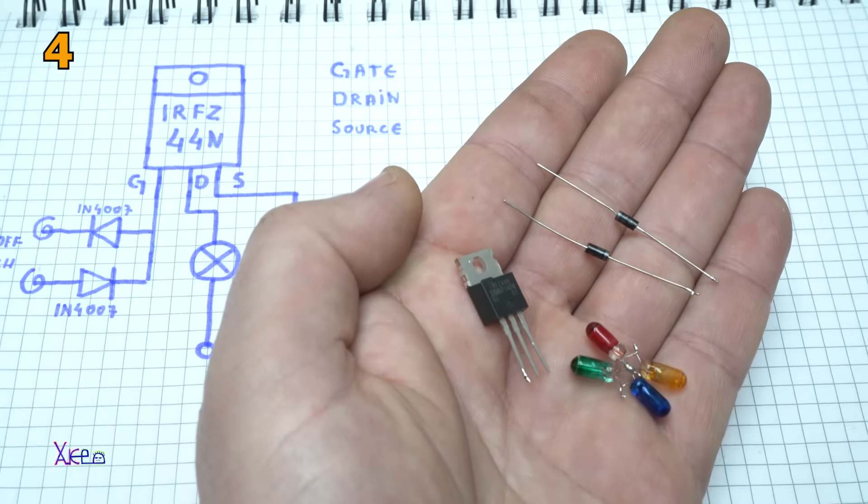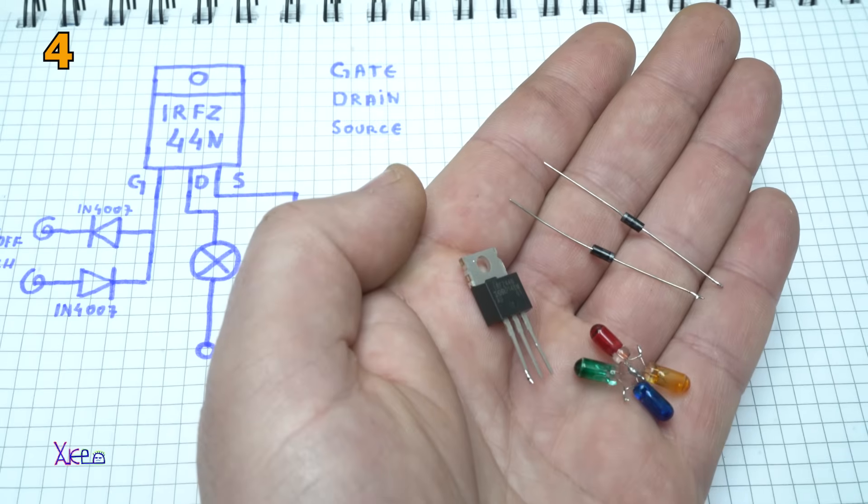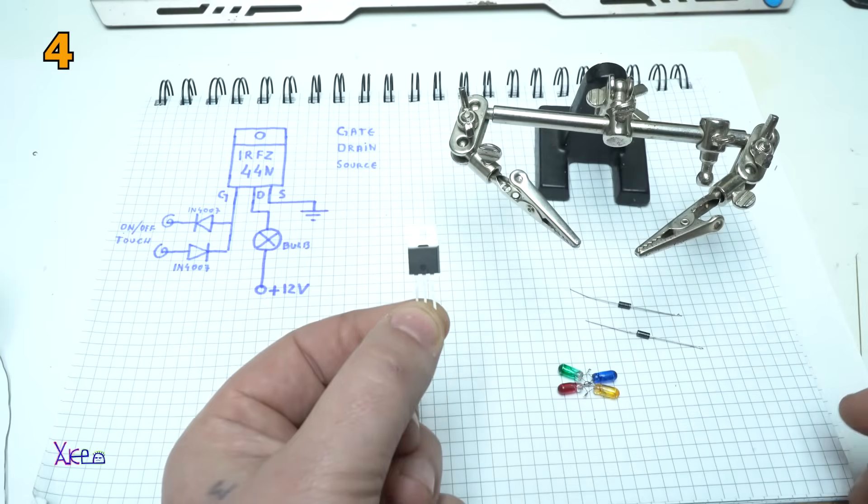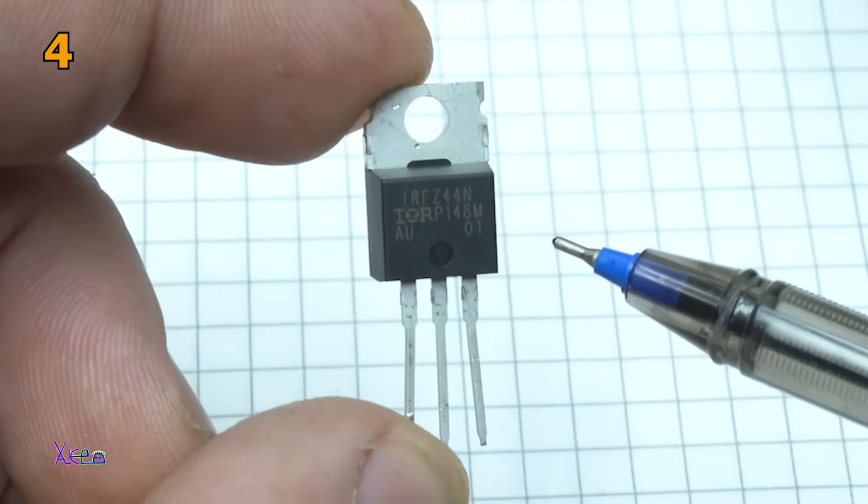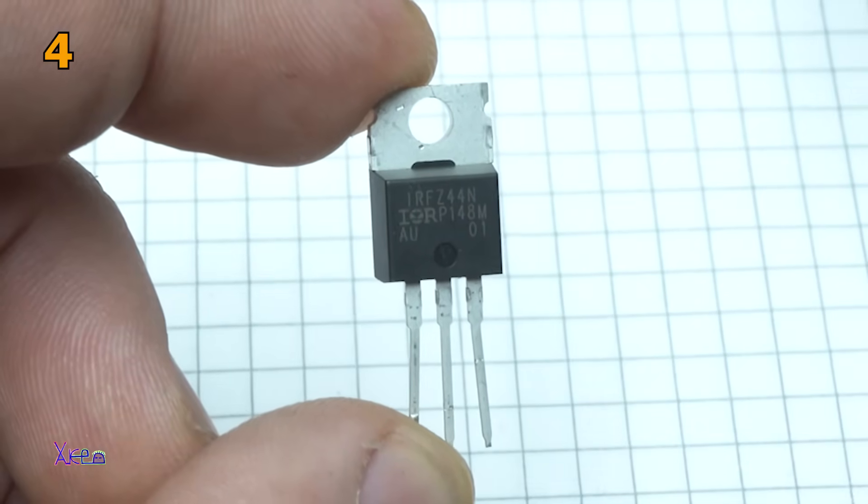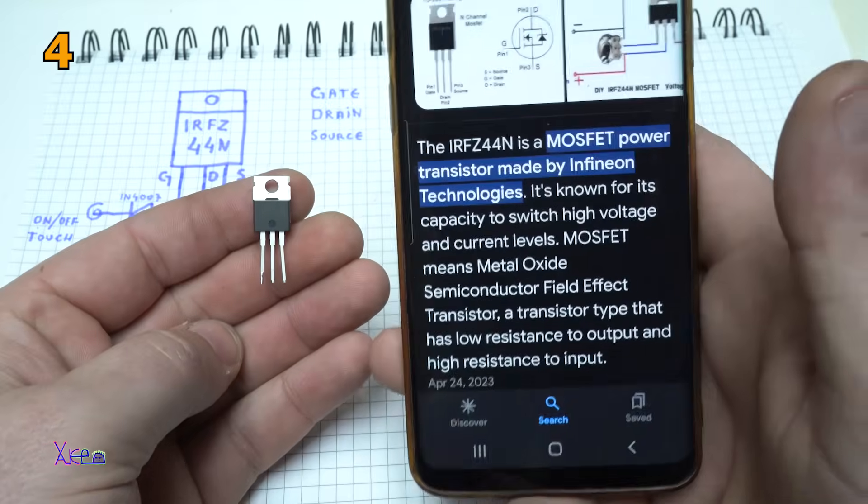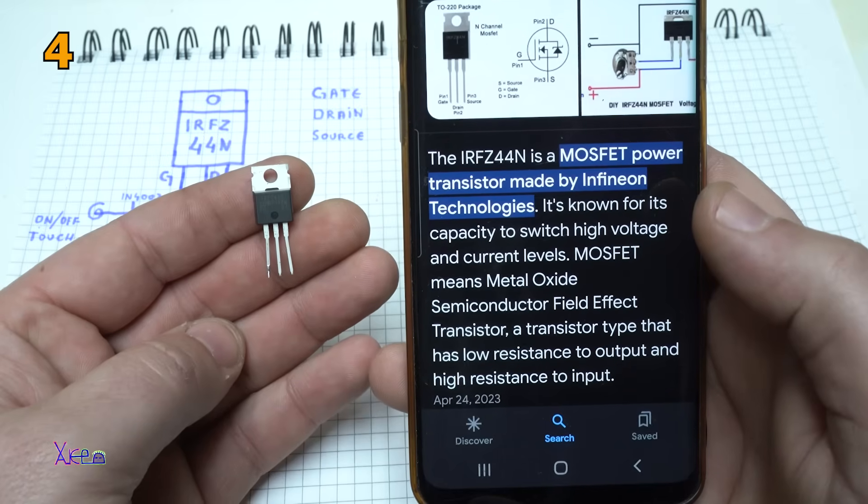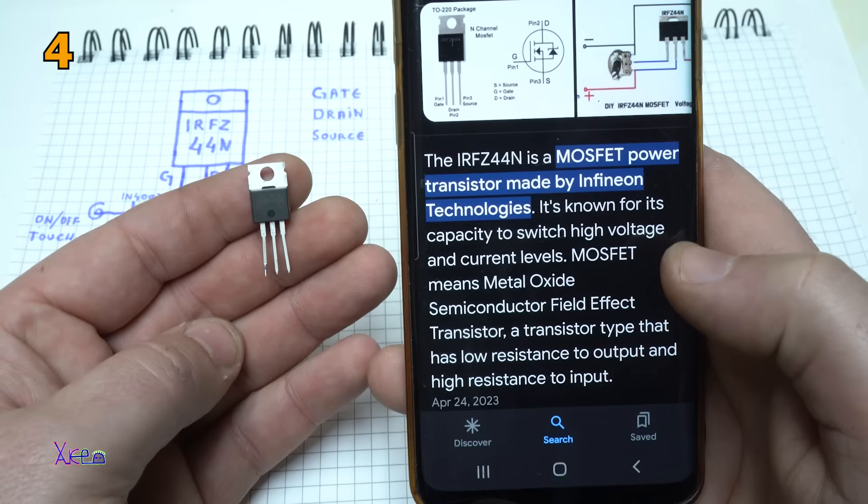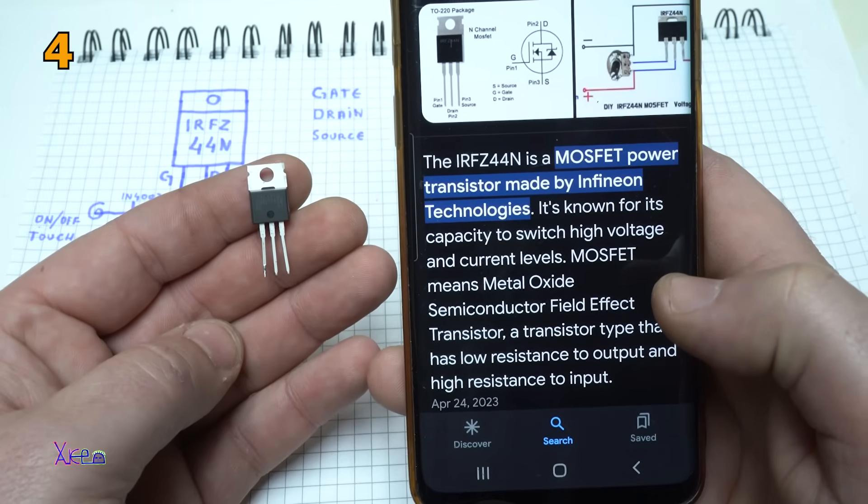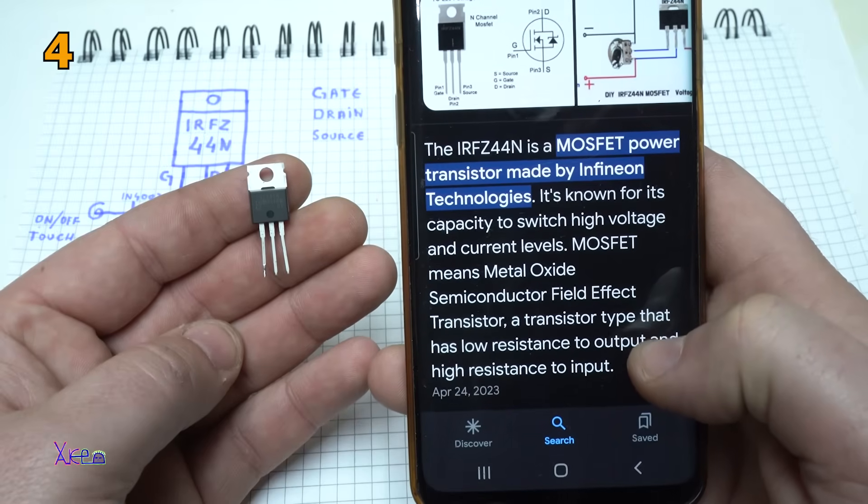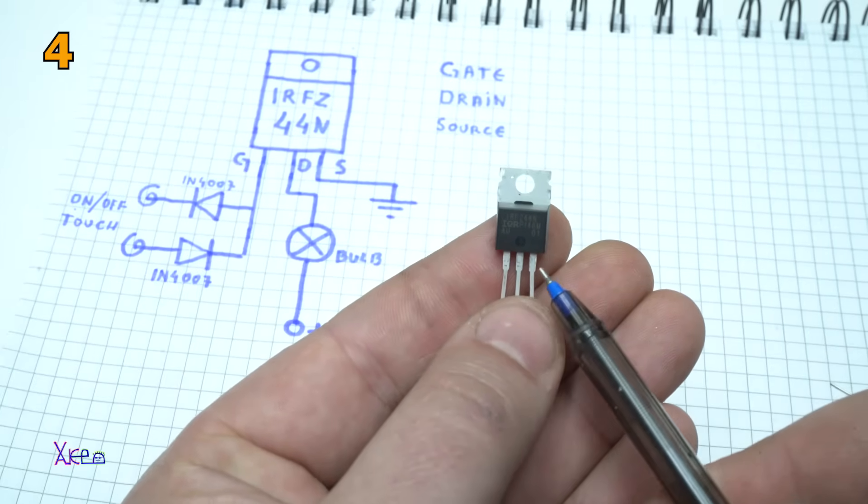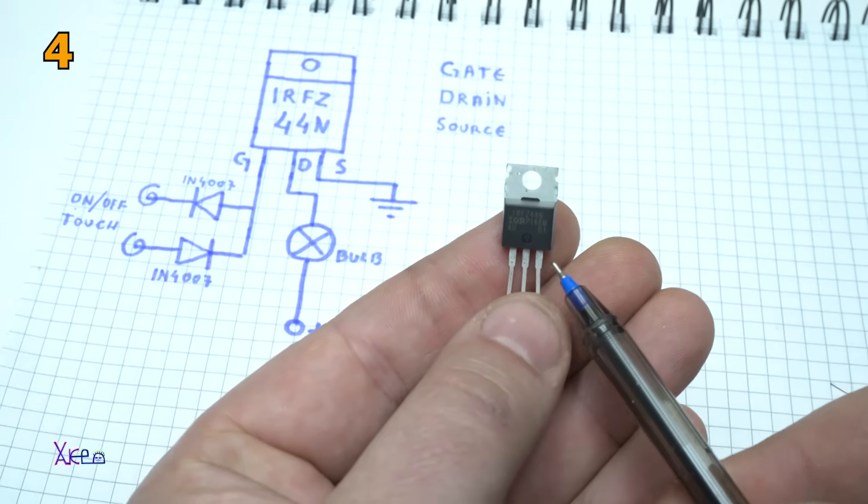Using these four electronic components I'm gonna show you how you can build a cool circuit that anyone can build. Let's start today's video. Meet IRFZ44N MOSFET transistor. What is this electronic component? The IRFZ44N is a MOSFET power transistor made by Infineon Technologies. It's known for its capacity to switch high voltage and current levels. MOSFET means Metal Oxide Semiconductor Field Effect Transistor, a transistor type that has low resistance to output and high resistance to input. It has three pins: the first one is gate, the middle one is drain, and the third one is source.